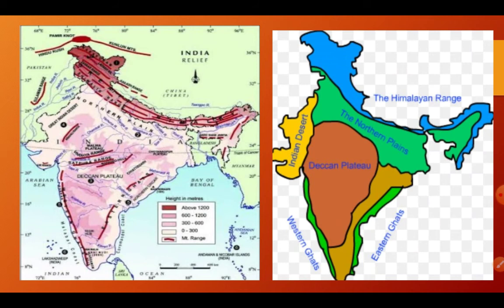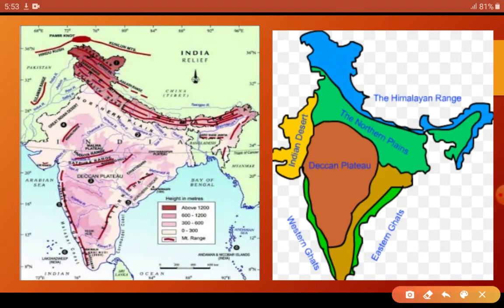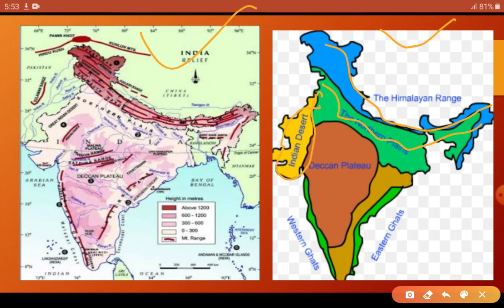First of all, you can see this kind of map in your book. I have given you these physical features to show you this map so that you don't have any problems. This green range is our Himalayan range. This is the northern plain. This is the Indian desert. This is the Deccan plateau. This is the eastern and western ghats. This is the coastal plains. This is the Andaman Nicobar, and this is the Lakshadweep.